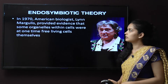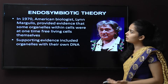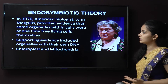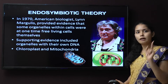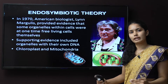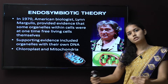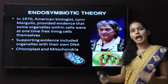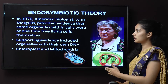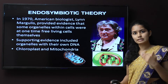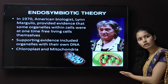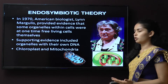The endosymbiotic theory was delivered by American biologist Lynn Margulis, who provided evidence that some organelles present in the cell are derived from outside. They were like prokaryotic bacteria which were present outside the cell and are now considered organelles living inside the cell. Supporting evidence includes organelles — mitochondria and chloroplast — that have their own DNA.